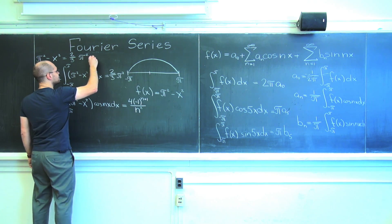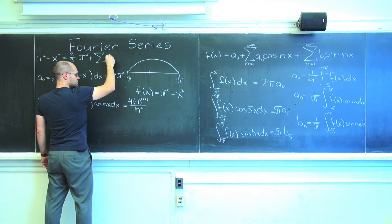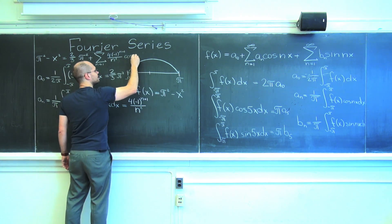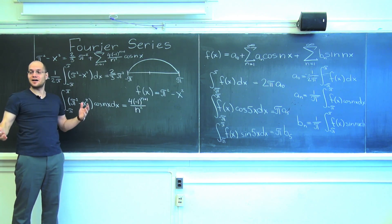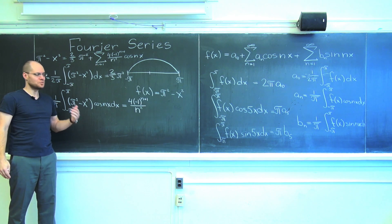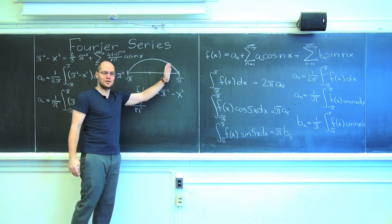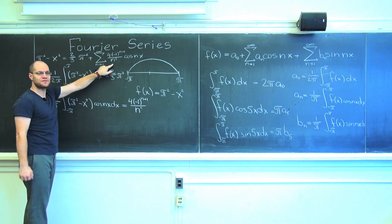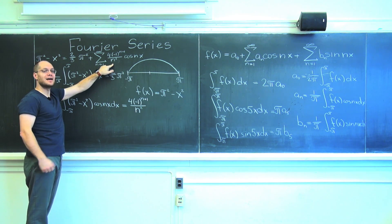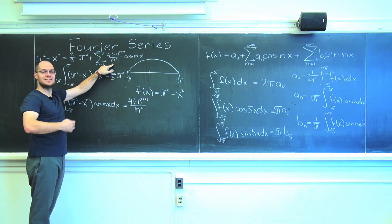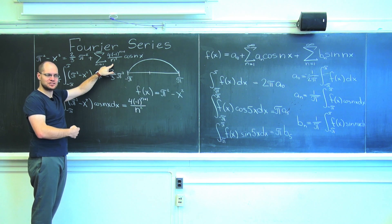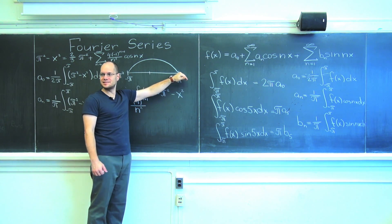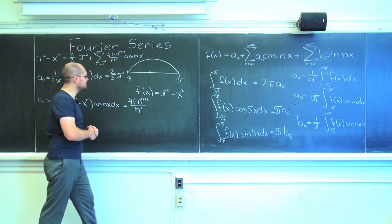Here's our second series, which, thanks to the continuity of the periodic continuation of this function, converges much faster. And the Gibbs phenomenon that I mentioned is diminished — it doesn't go away, but it is diminished because the function is continuous.